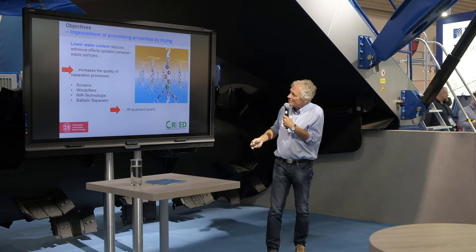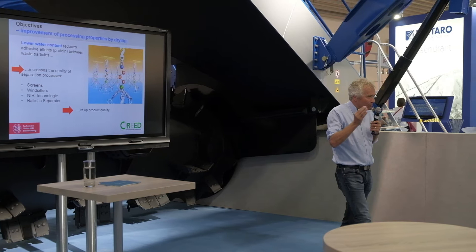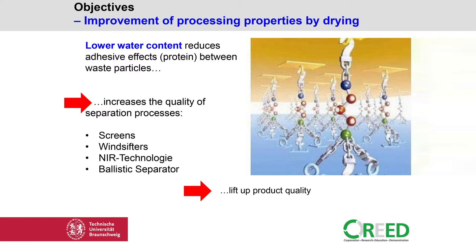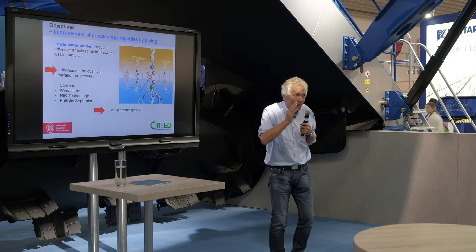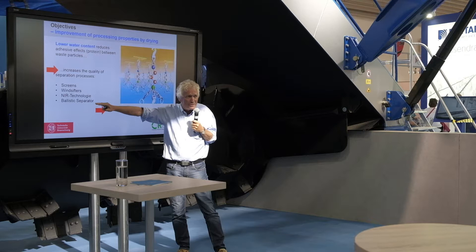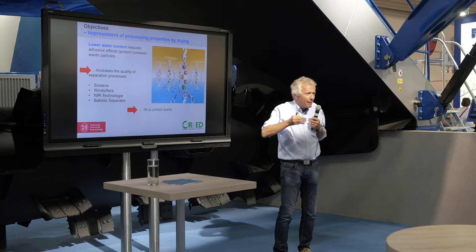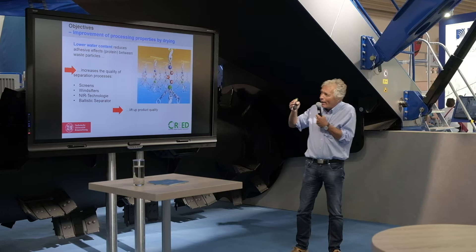There is another very important part to consider when talking about drying: reducing the adhesive effects between different waste components. The lower the water content, the lower the adhesion, so separation becomes much easier. This is very important for the following processing steps — for example, screening is much easier, as is wind shifting, NIR technology, and ballistic separators. The efficiency of all these technologies is better with dry waste compared to wet waste.